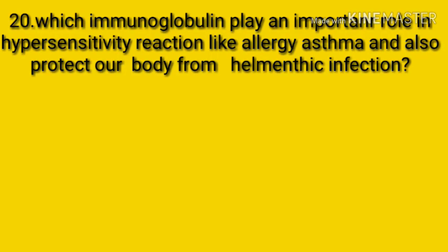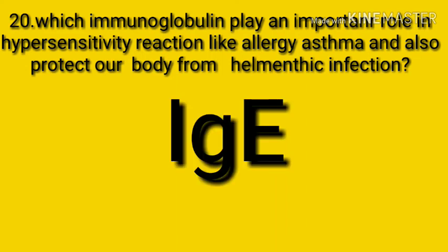Question number twenty: which immunoglobulin plays a role in hypersensitivity reactions like allergy and asthma, and also protects the body from helminthic pathogens? The answer is IgE. IgE is responsible for type 1 hypersensitivity reactions and also protects the body from helminthic pathogens.